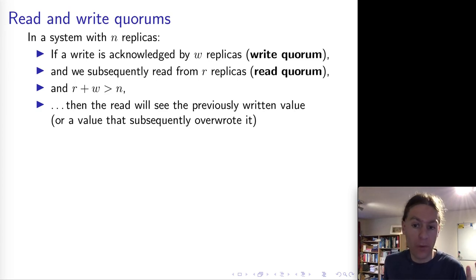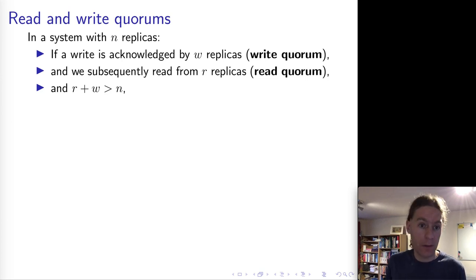Or maybe it was concurrently overwritten by another client, but it will see an up-to-date value. Whereas if we have, if this R plus W is less than or equal to N, it could happen that we don't get the value back that we were expecting.